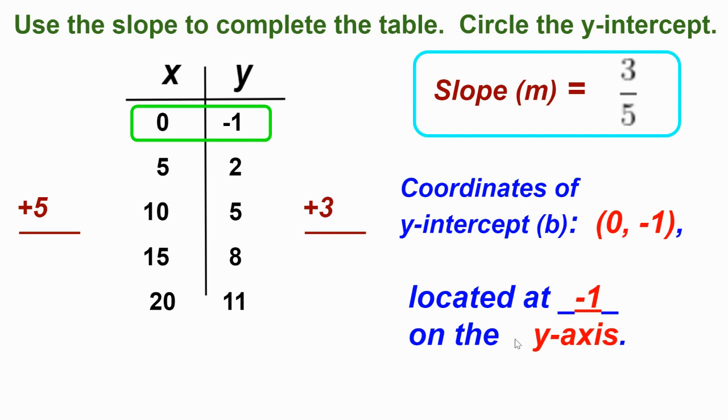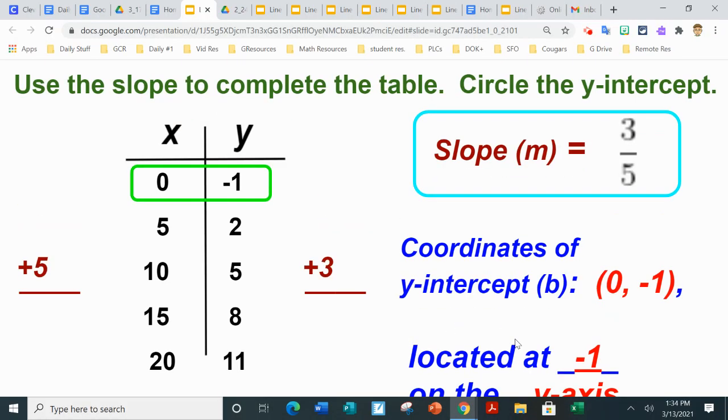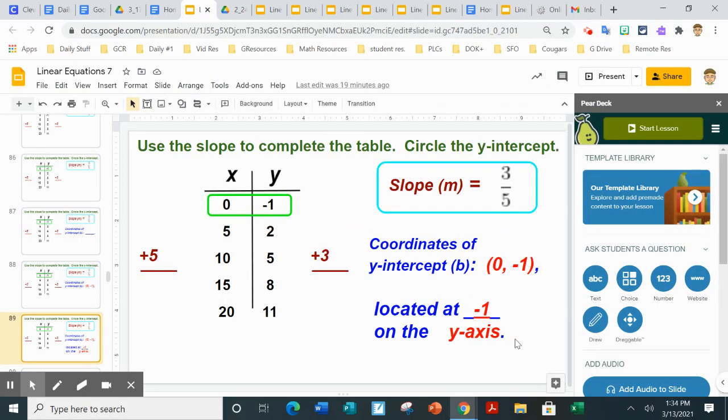So remember, if it's increasing as you go down the table, it's going to decrease as you go back up. So you've got to make sure you're going to subtract the number as you work back up the table. That's the key. All right, so let's go practice this and figure out how to use the slope to complete the table in this situation.